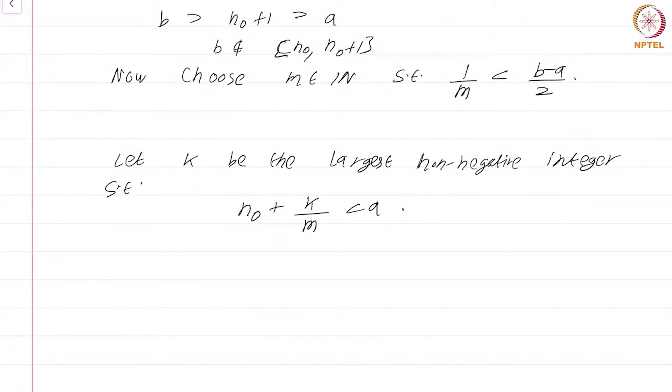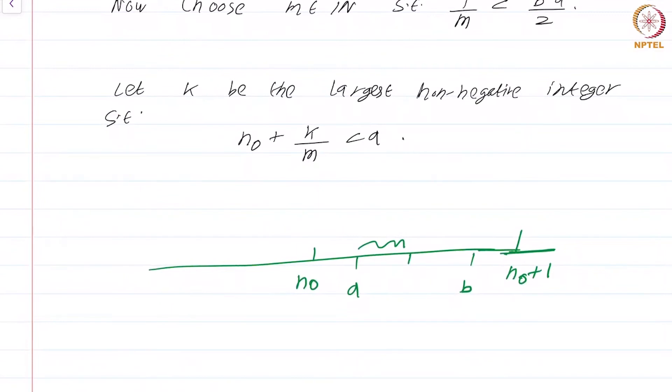A lot of confusing things have happened, so let us draw a picture to make sense of what is going on. We have the points a and b. We know that n₀ is here and under our hypothesis n₀+1 exceeds b. What we have done is we have chosen (b-a)/2, that is exactly half this length, and then we are choosing a natural number so large that 1/m, the size of 1/m, is less than half the size of this interval (a,b).